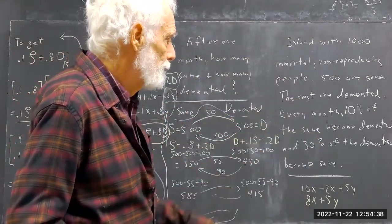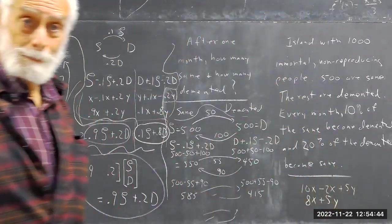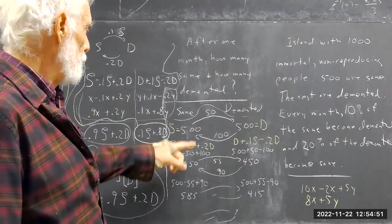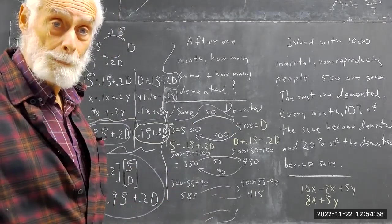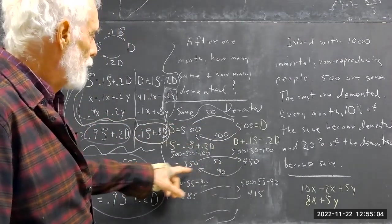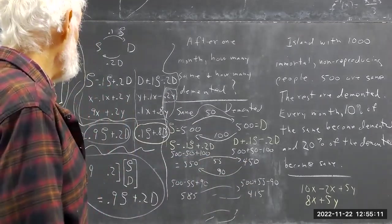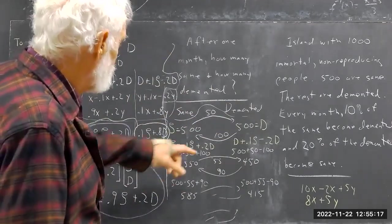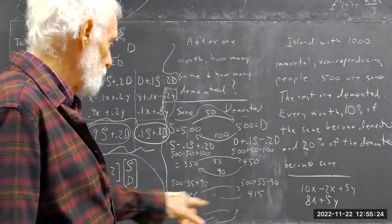I'm transitioning over to the 20% problem. Your numbers are a little different — here we have 50 going over one way and 100 coming back. It's the same 10%, but now it's 20% of 500 which is 100, so that gives you 550 and 450 instead of 600 and 400. Same calculation, same scheme. You've got 10% here and 20% here instead of 30%, which gives us these numbers.